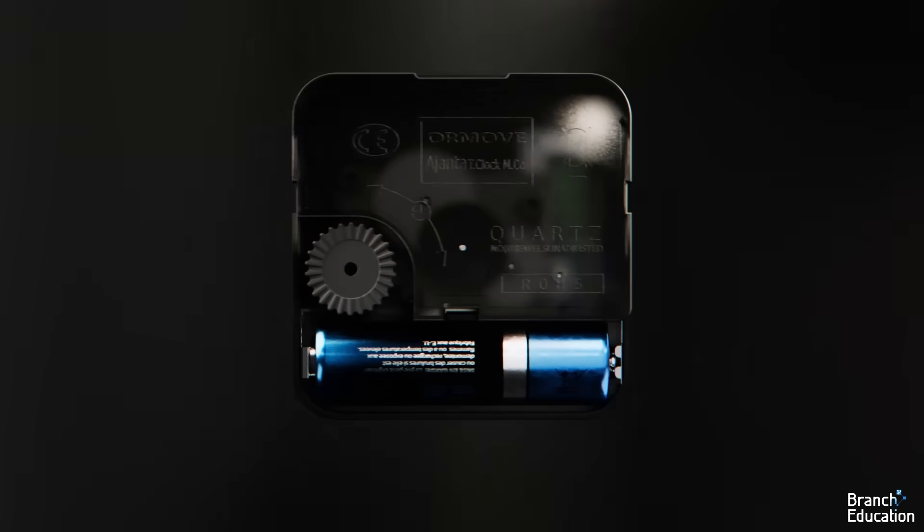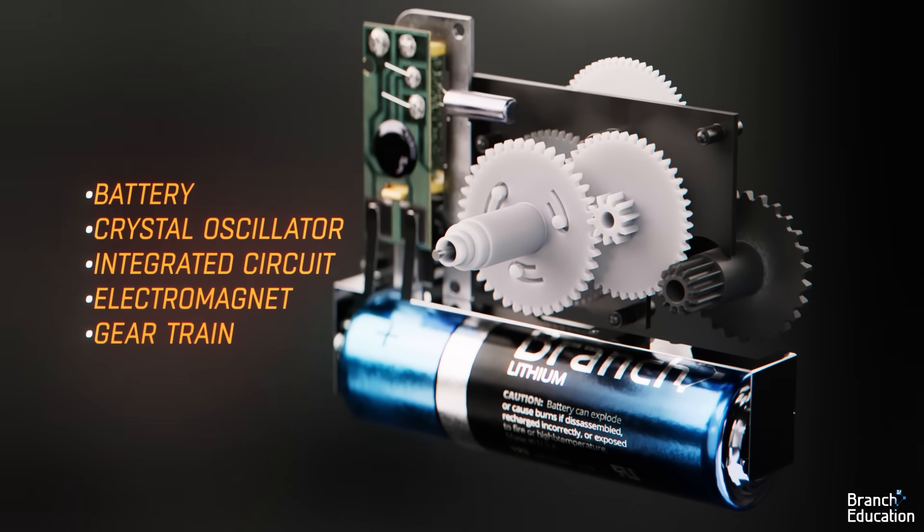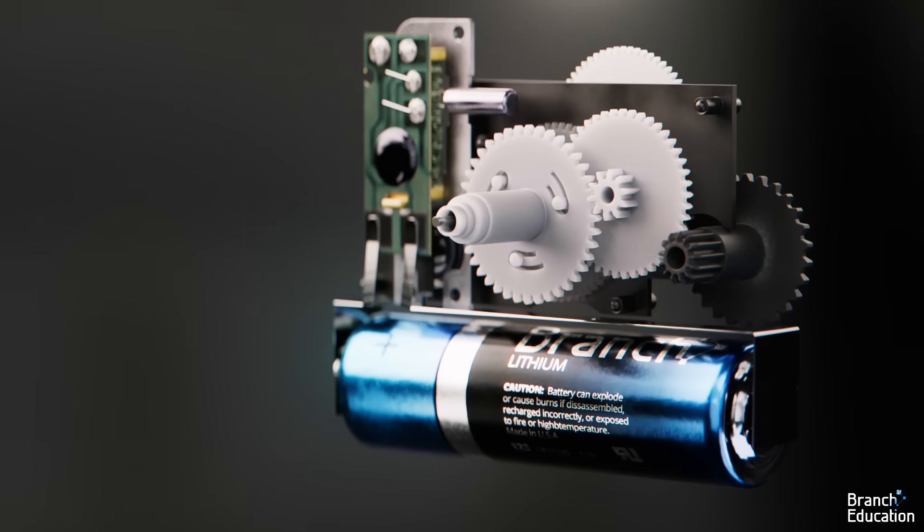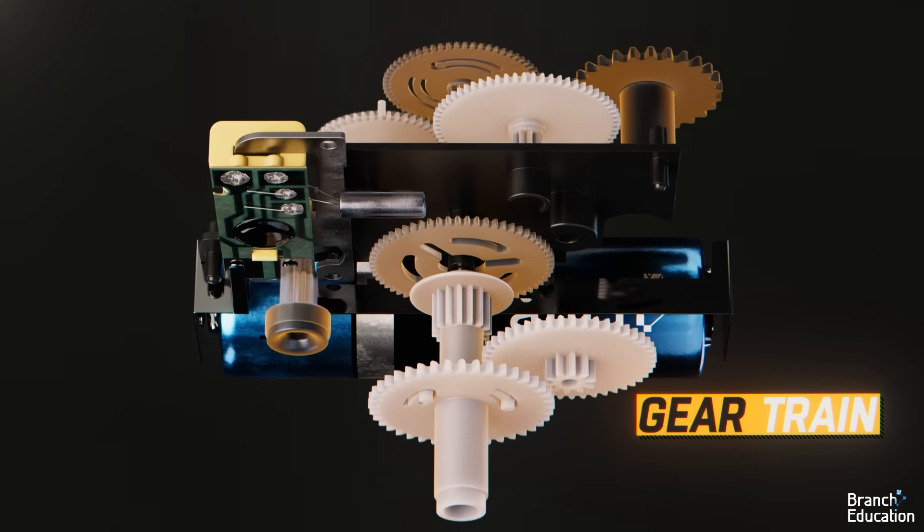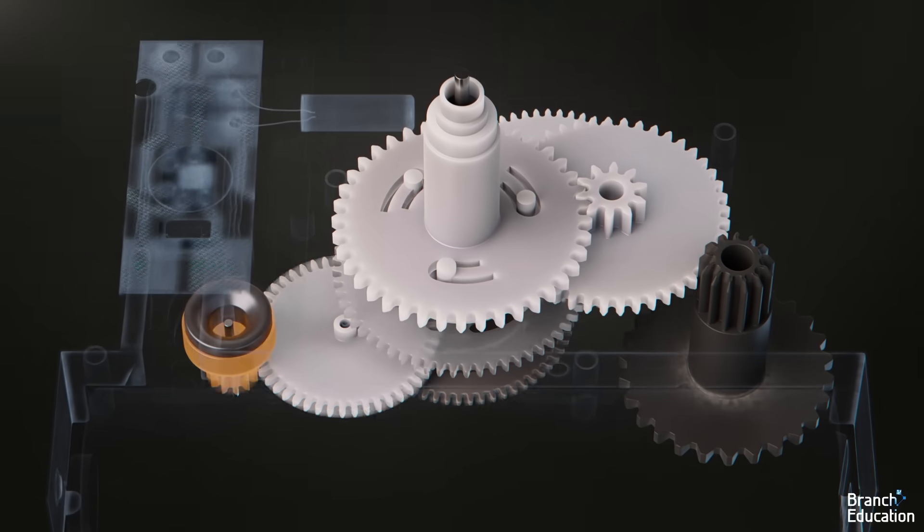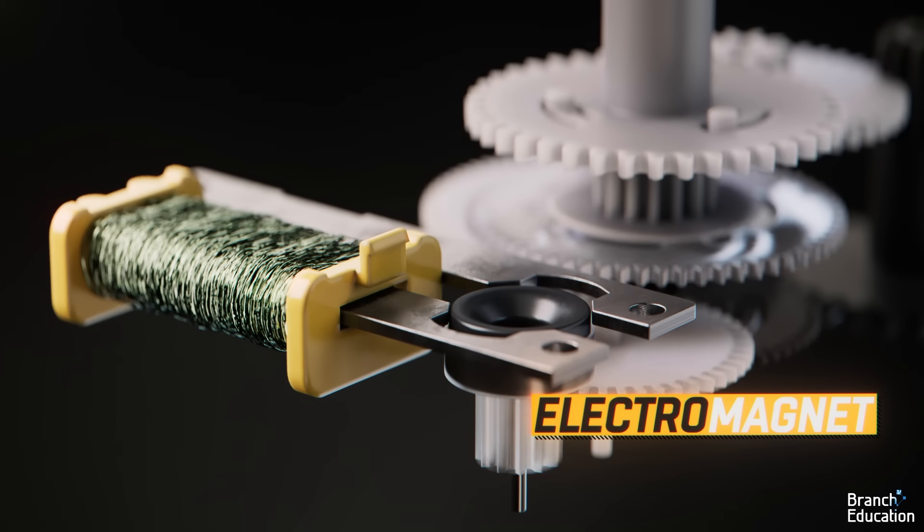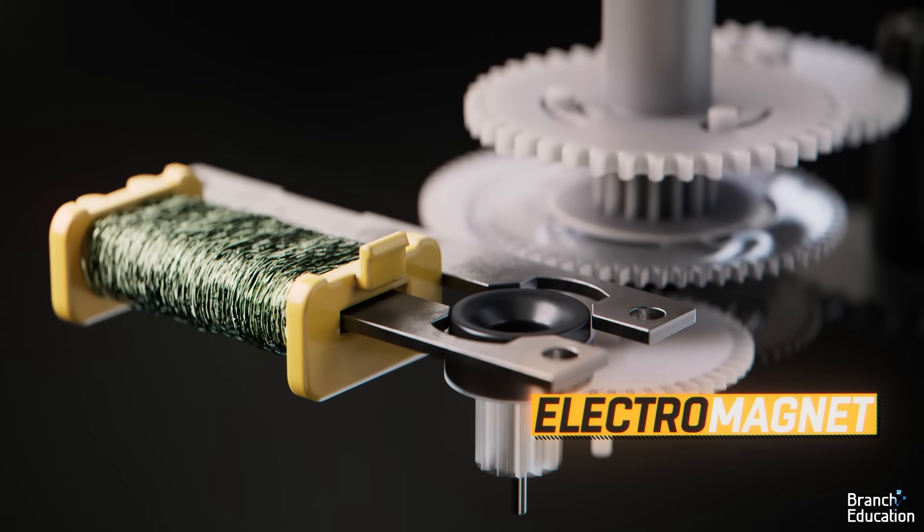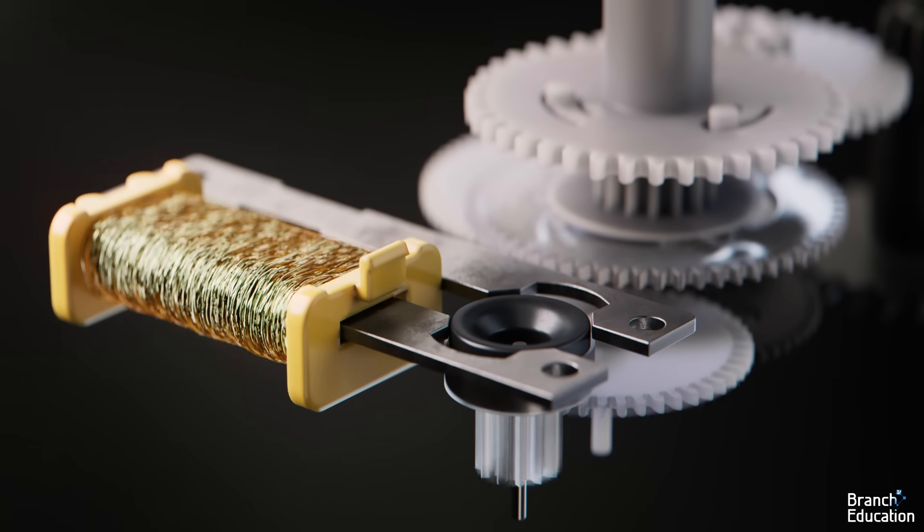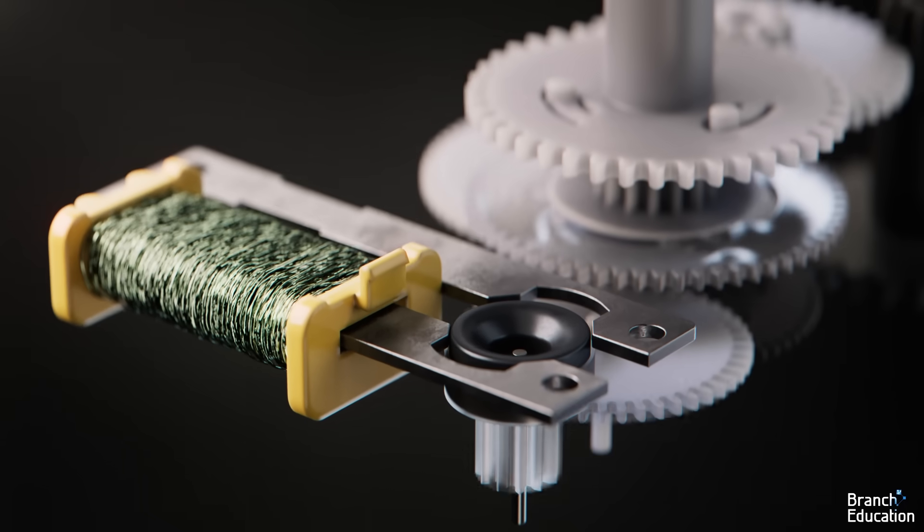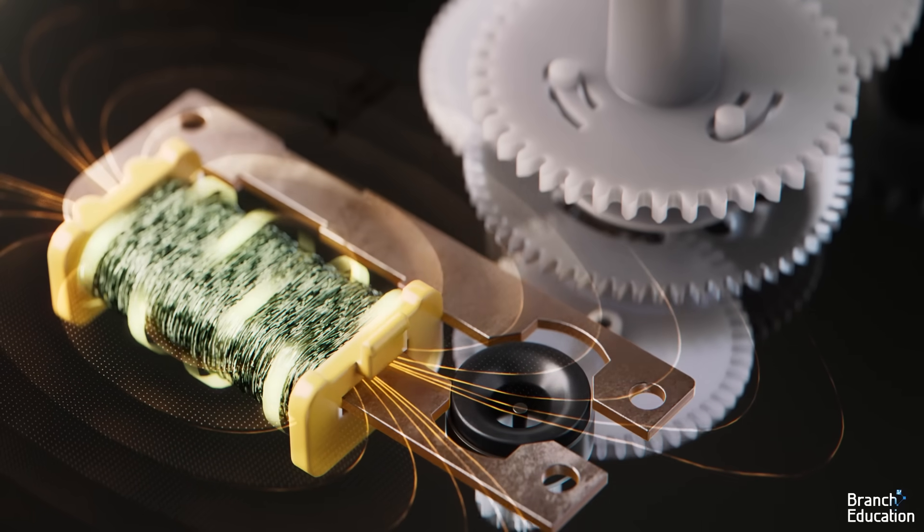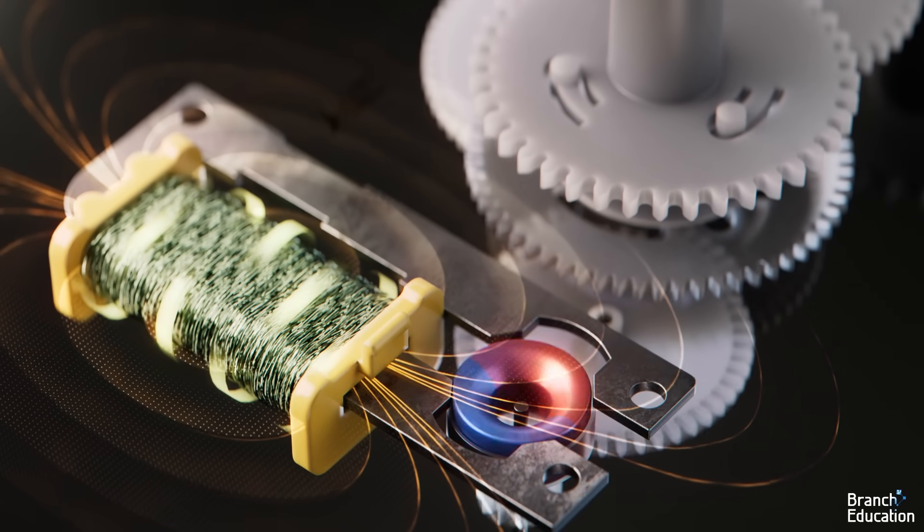Inside this $10 wall clock are five unique systems that enable it to work. The most recognizable is the gear train made from eight gears. At the beginning of the gear train, a driver gear is rotated by an electromagnet, which provides the force to rotate the clock hands. This electromagnet is composed of a coil of wire, which uses electrical current to generate a magnetic field, and a strip of iron to channel that magnetic field to the drive gear.